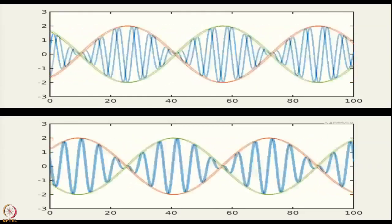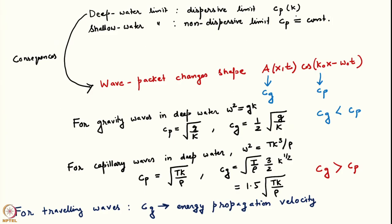An important point to note is that for travelling waves, the group velocity represents the energy propagation velocity of a Fourier mode. One must remember that the group velocity has the physical interpretation of energy propagation velocity.